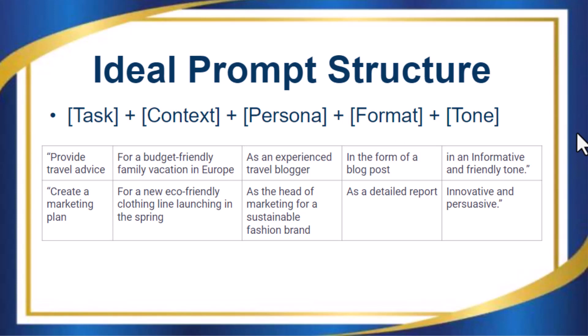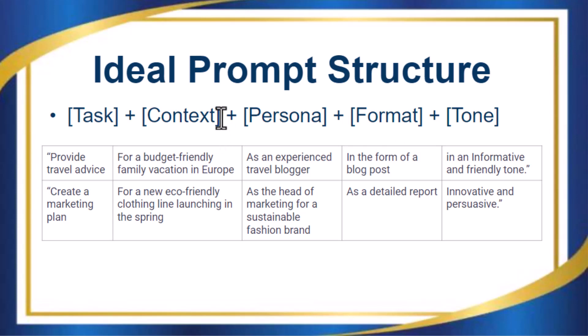The important elements that most prompts will include are: a task — what exactly should ChatGPT do? Should it write text, create an image, create an outline, or reason through a problem? The context describes background information — why you need this output and in what context. A persona is the idea of assigning a role, telling ChatGPT what persona it will take on to create this output, which also helps it get additional context.